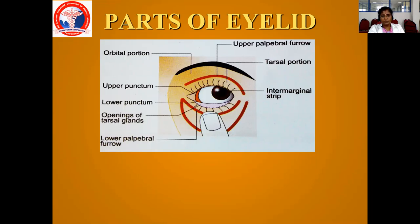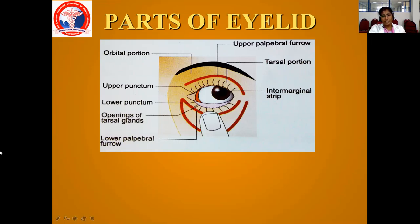In the upper lid there is the upper punctum — just an opening through which the tear film gets drained into the upper punctum and from there into the lacrimal sac. The lower eyelid contains the lower punctum. You also have openings of the tarsal glands — the meibomian glands — which are present in the lid margins, seen as pores in the lower lid margins. Between the lashes and the meibomian gland orifice is called the intermarginal strip. You have one in the upper lid and one in the lower lid, and you also have the lower palpebral furrow.